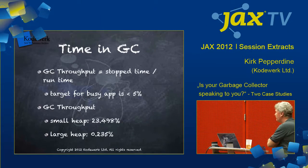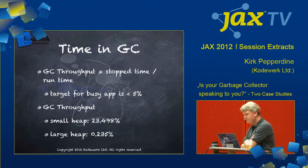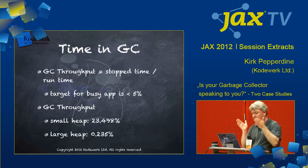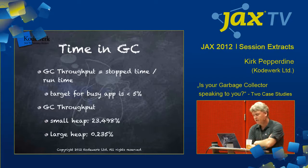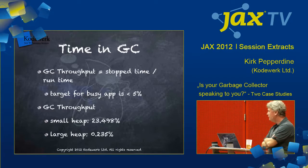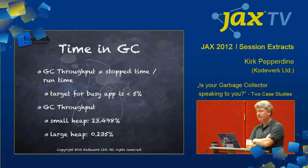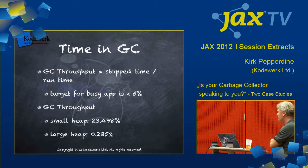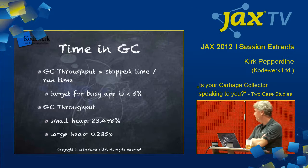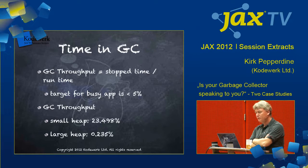If you look at this thing called GC throughput — this calculation — what we're actually doing is looking at the time stopped for GC compared to the overall run time, and we'll use that as a measure of how efficient our garbage collector is when it's running. Generally, our target for GC throughput is somewhere around 5 percent or less — the closer we get to 1 percent, the happier life is. As it turns out, the GC throughput for the small heap application was 23.4 percent, and strangely enough, for the large heap it was 0.23 percent.